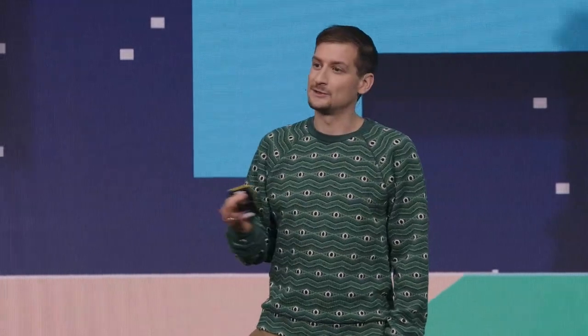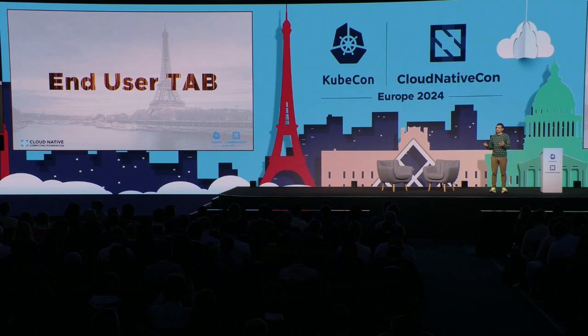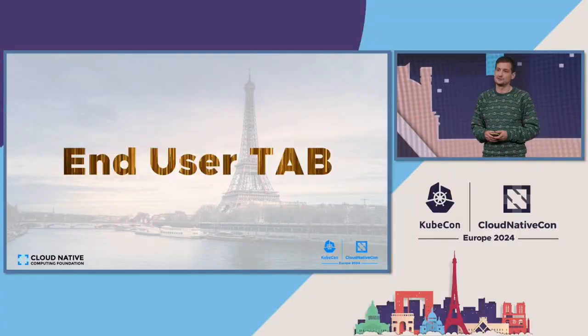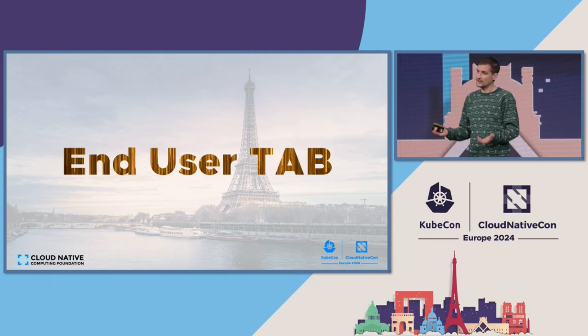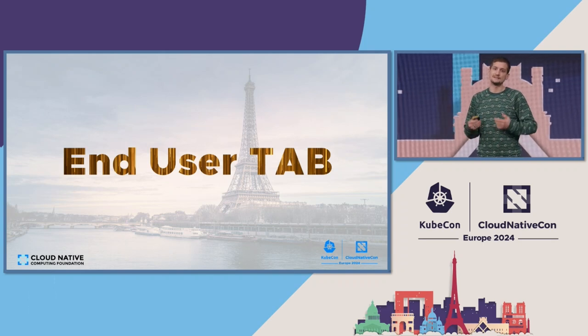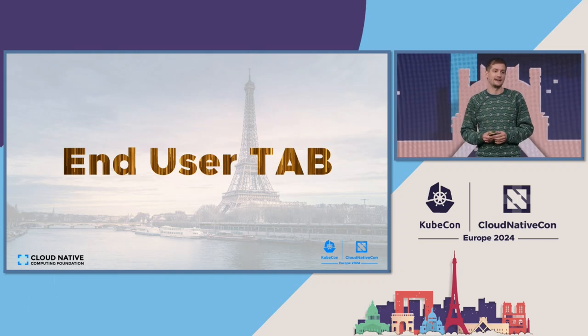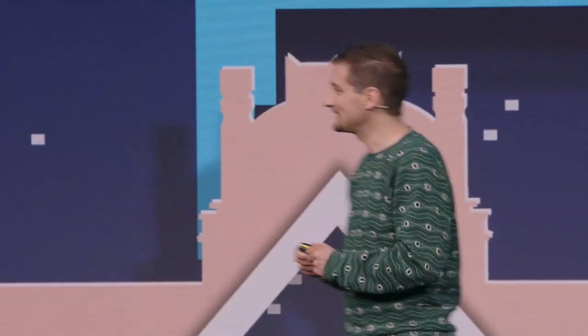Our community within CNCF is built up on three main pillars: our governing board, which manages direction and finances and some overall oversight; our technical oversight committee, which manages projects that are incoming, shifting levels and different graduate statuses. And then end users are the third pillar. But for the longest time, we didn't have a body to build that up. Now we do. At the end of last year, we spun up our End User TAB, and I'd like to invite End User TAB chair, Ailalita Sharma, to the stage.